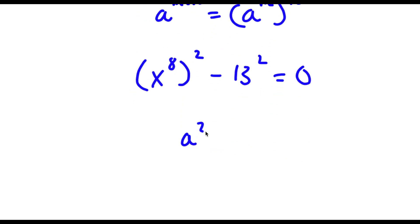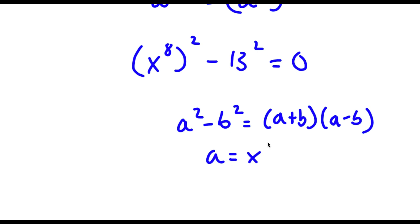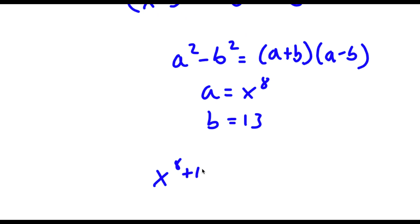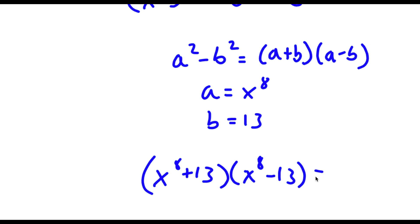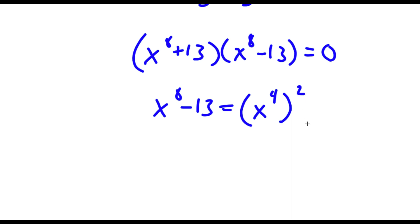Now if I have something in the form a squared minus b squared, this is the same thing as a plus b times a minus b. So in this case a is equal to x to the power of 8 and b is equal to 13. So now I have x to the power of 8 plus 13 times x to the power of 8 minus 13 equals 0. Now x to the power of 8 minus 13 is the same thing as x to the power of 4 to the power of 2 minus the square root of 13 squared.